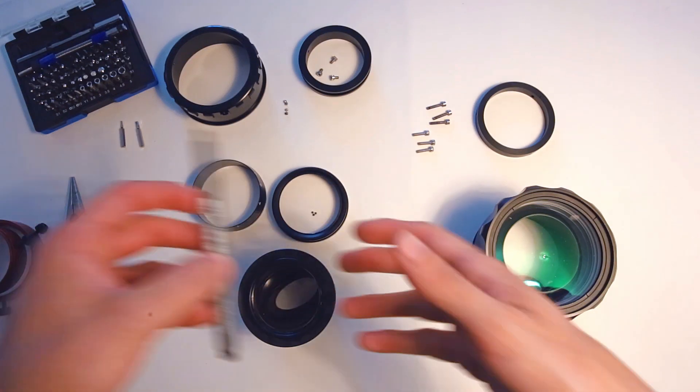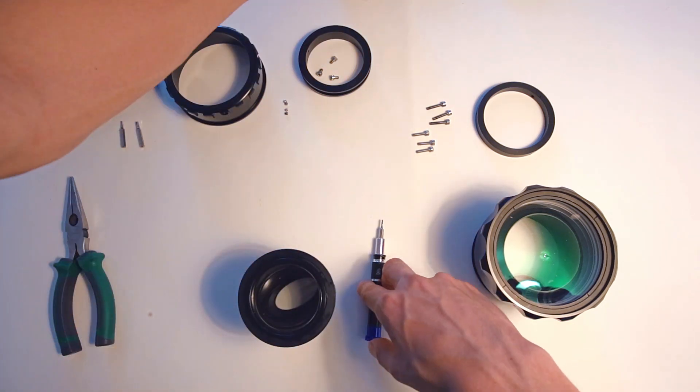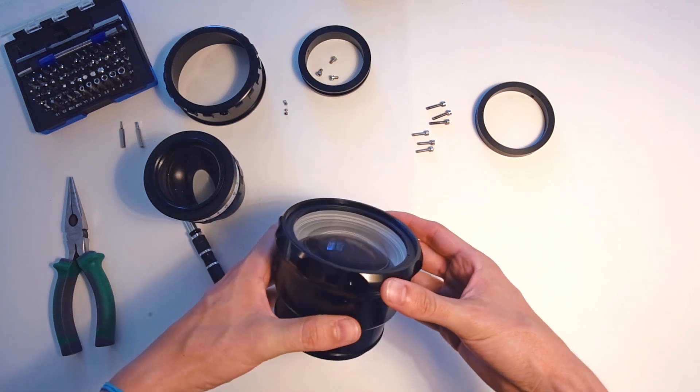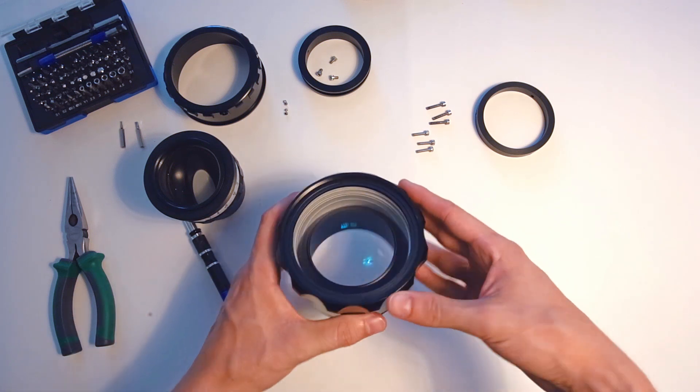Hell yeah! Now, on the Rectilux itself, check if the front optics are properly secured. If not, fix it using a lens wrench, but do not over-tighten it.